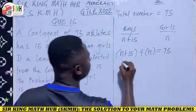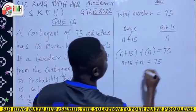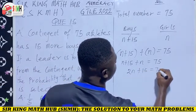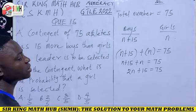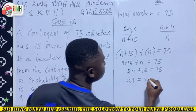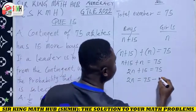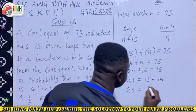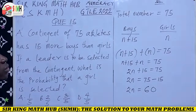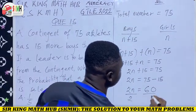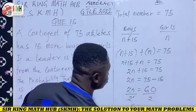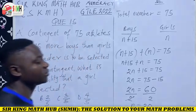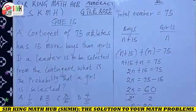Let's solve for n. n plus n gives 2n, so 2n plus 15 equals 75. Transposing 15: 2n equals 75 minus 15, which gives us 60. Dividing both sides by 2: n equals 60 divided by 2, which is 30.